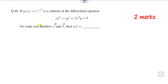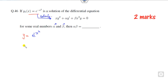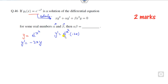Now look at question 46. One solution is given and you have to find the values of alpha and beta. It is simple. Since the given function is a solution, it must satisfy the differential equation. We find y' quickly: y' = e^(−x²) · (−2x), which equals −2xy. So y' = −2xy.